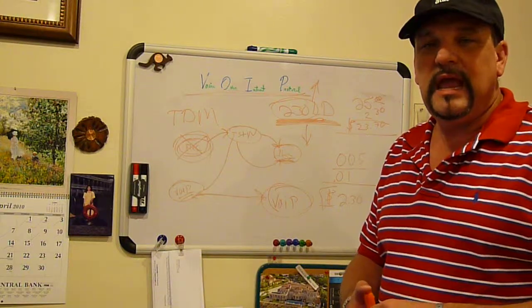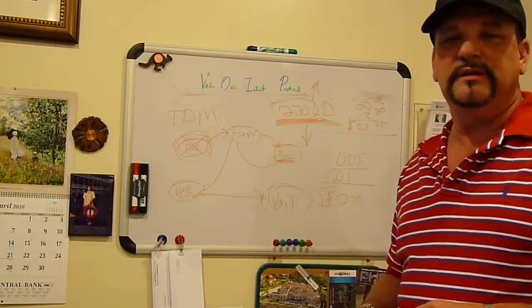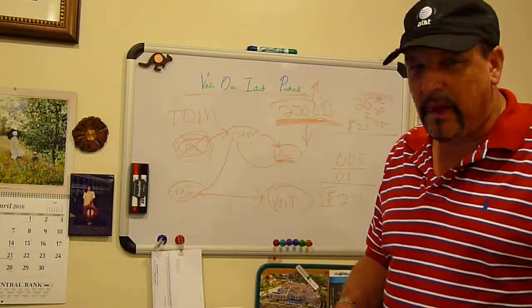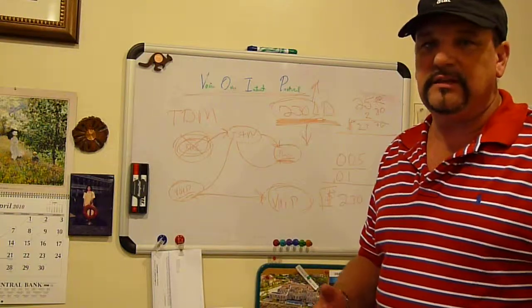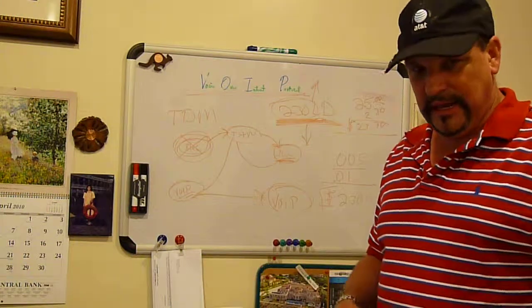You can get an internal voice over IP solution type of circuit, which is like an asterisk box. Basically, in that case, you do need a TDM interface,